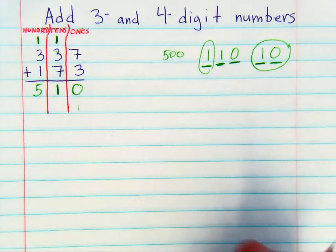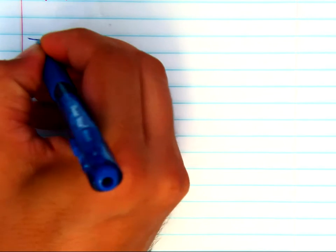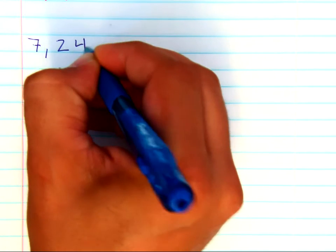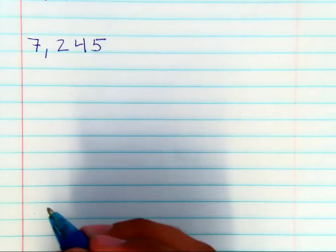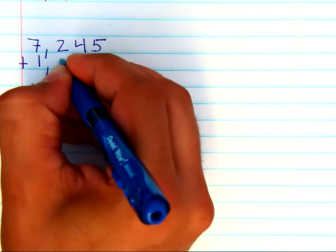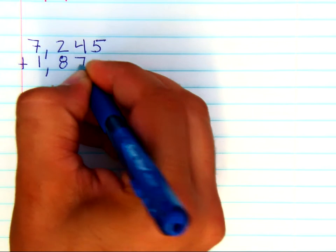Now, when you're doing four digit numbers, such as 7,245 plus 1,877, there's really not a whole lot of difference in adding, except for the extra place value.